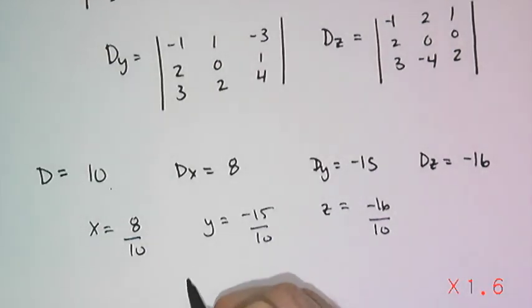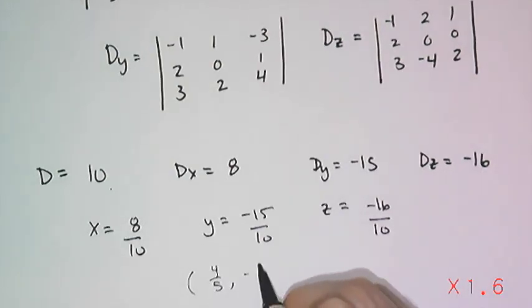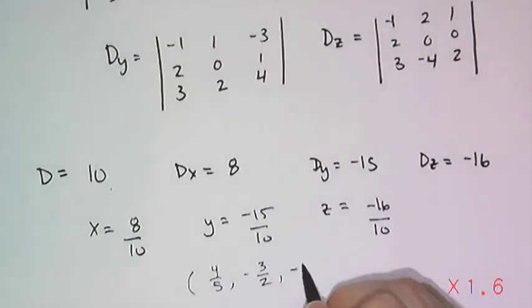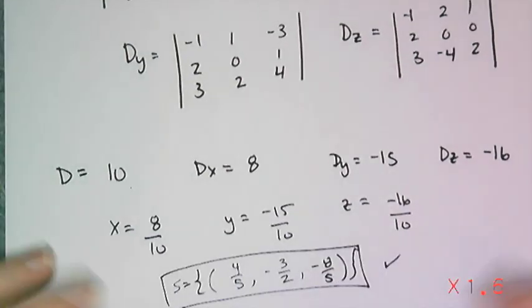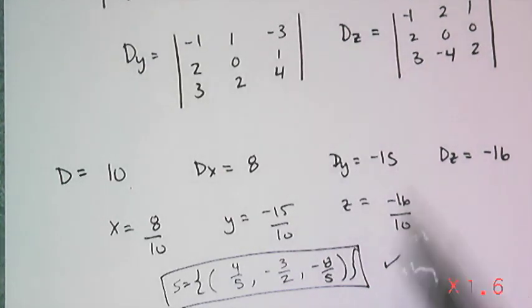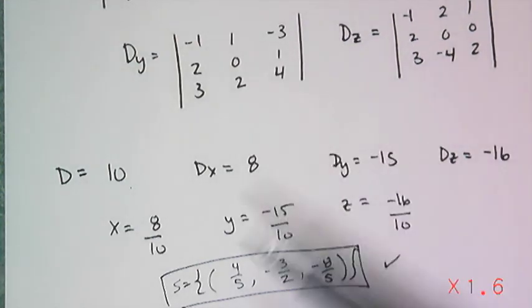And so simplifying those, I get a solution of 4 fifths, negative 3 halves, and negative 8 fifths. So yay, Cramer's rule. And actually, Cramer's rule does a couple of more things, too, which you will see in the in-class activity. You can find areas of triangles, you can find equations of lines, you can determine if points are collinear, and that's all variations of Cramer's rule.